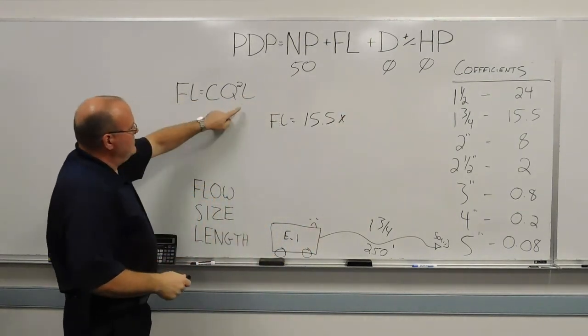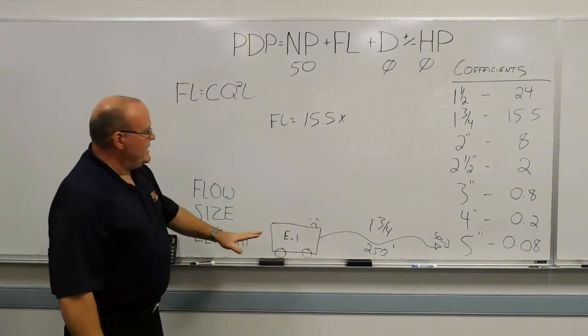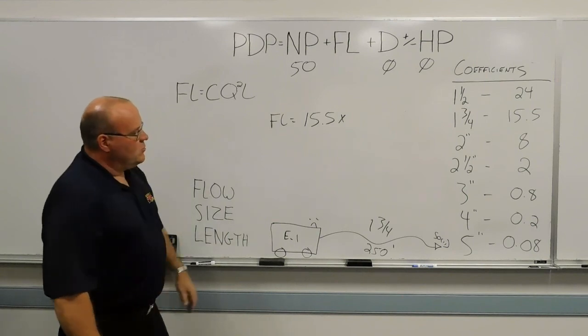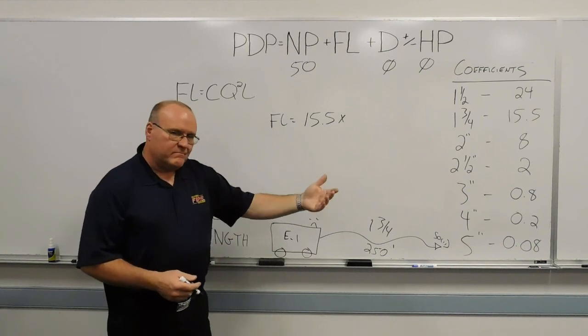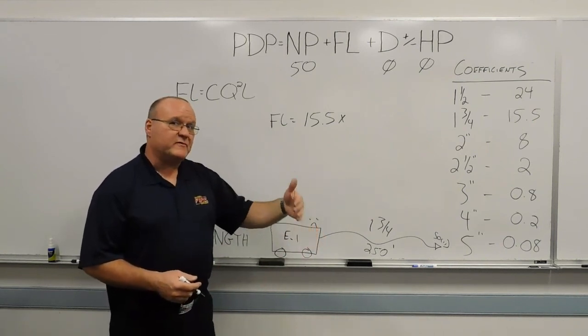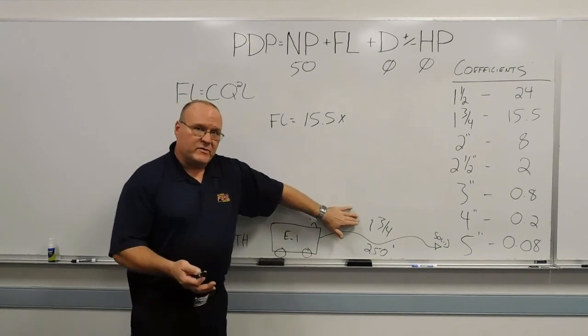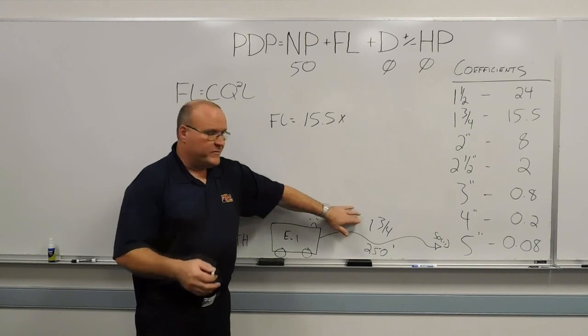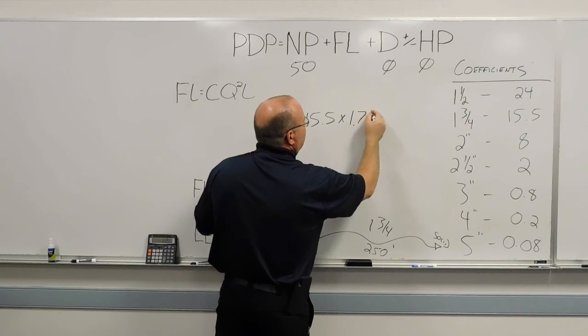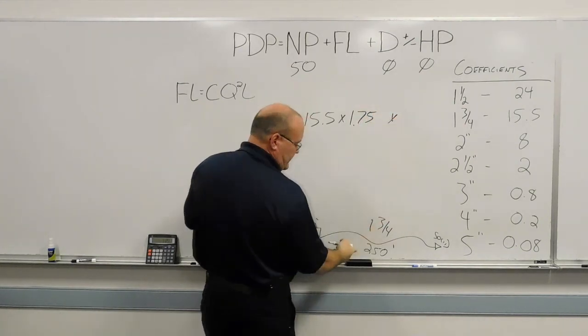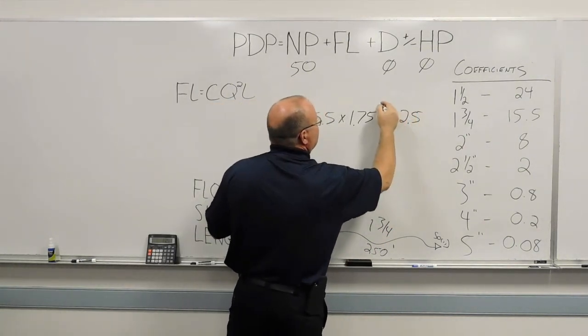And then we know the length of 250 feet. We know what that's going to end up being. We just need to know our flow. So with our inch and three-quarter hose lines, our inch and three-quarter hose line with a solid stream nozzle with a 15-16 tip, we're going to estimate it would be 185 gallons a minute at 50 pounds. We're going to say 175. So 1.75, and we divide that by 100. And then our length, 250 feet divided by 100, 2.5. And this is squared.